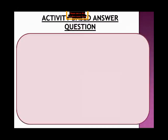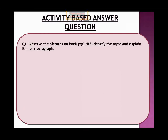Now coming towards the activity-based answer question. Open your book page number two. First, put the heading 'Activity Based Answer Question,' then write the question: observe the pictures on page number two and three, identify the topic and explain it in one paragraph. You will observe them carefully, select a good topic, and then write a small paragraph of two or three lines.